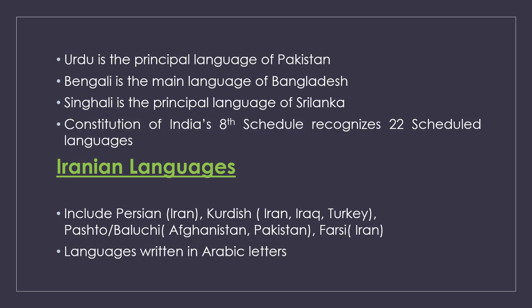The Iranian languages include Persian in Iran, Kurdish in Iran, Iraq and Turkey, Pashto and Baluchi in Afghanistan and Pakistan, and Farsi from Iran. These languages use Arabic script.